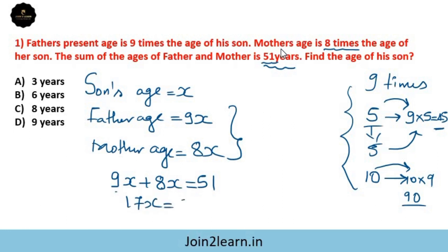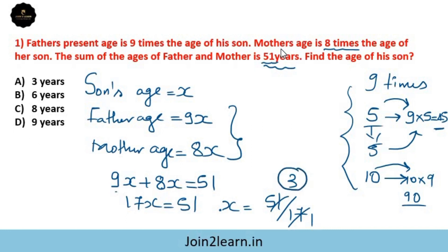17x is equal to 51. So x is equal to 51 divided by 17, which gives x equal to 3. Therefore the son's age is 3 years. Let's cross-verify: the right answer is 3 years.